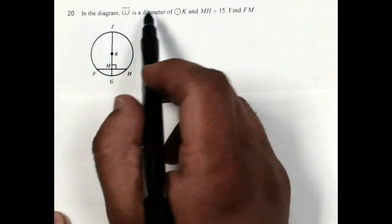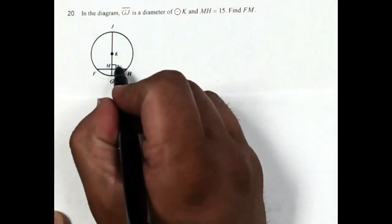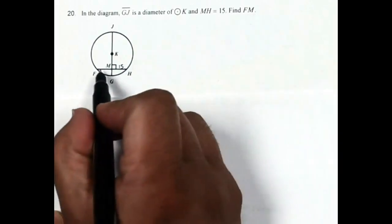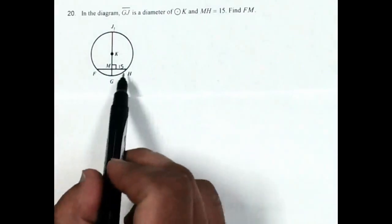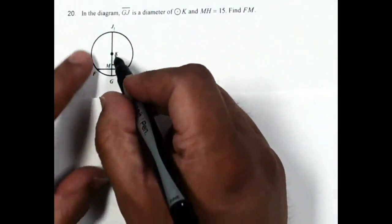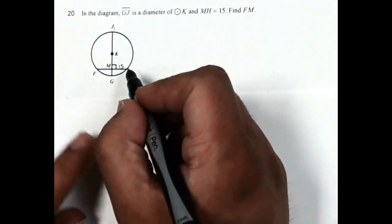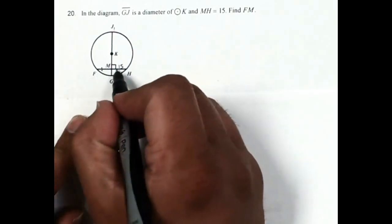Now number 20 in the diagram segment, GJ, is the diameter of circle K, and MH is 15. Find the measure of FM. Notice that this is a diameter. This chord is perpendicular to the diameter, so that means this diameter is a perpendicular bisector. So if MH is 15, FM is also going to be 15.